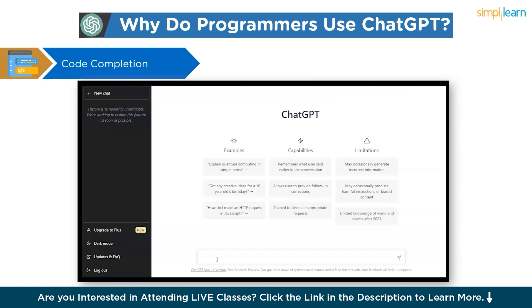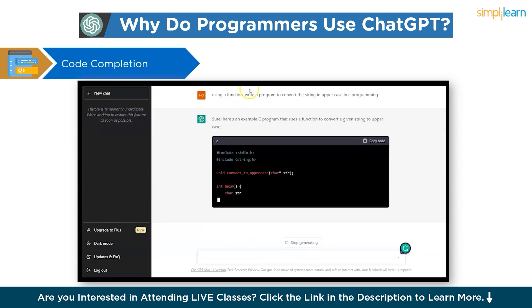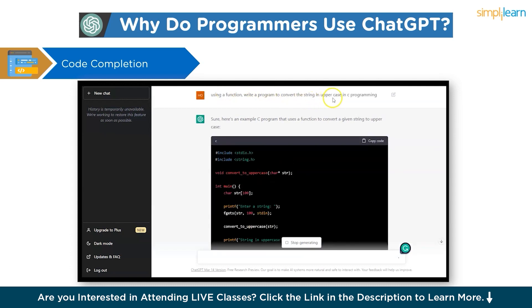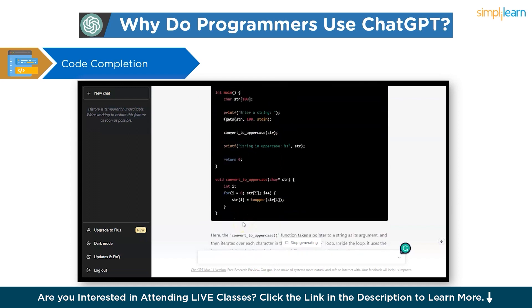Let's see the example of code completion using ChatGPT. Even if the program is described in natural language, ChatGPT will generate the proper code. We typed: 'Using a function, write a program to convert the string to uppercase in C programming.' As you can see, it has used a function called convertToUppercase and provided the complete code for converting a string to uppercase.